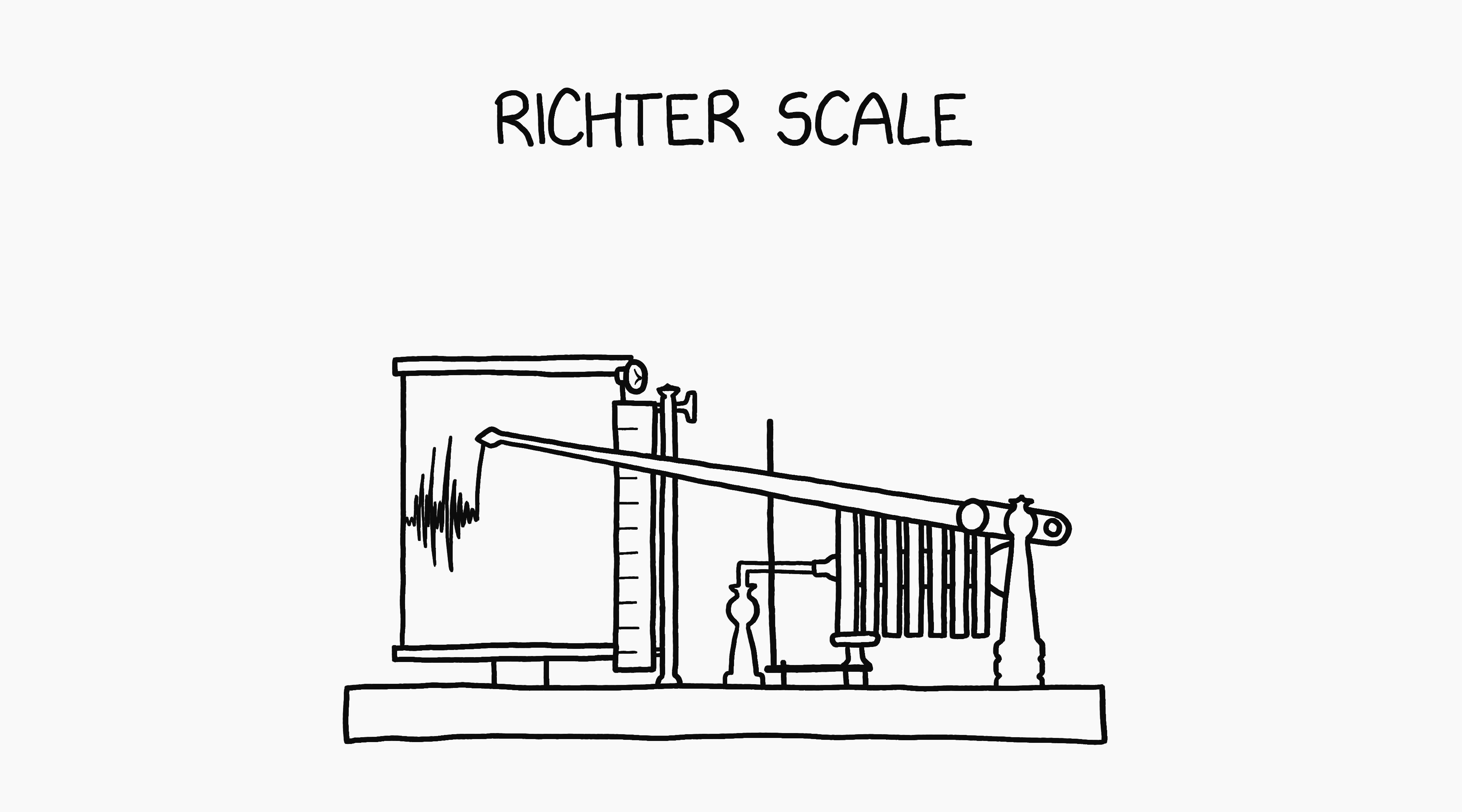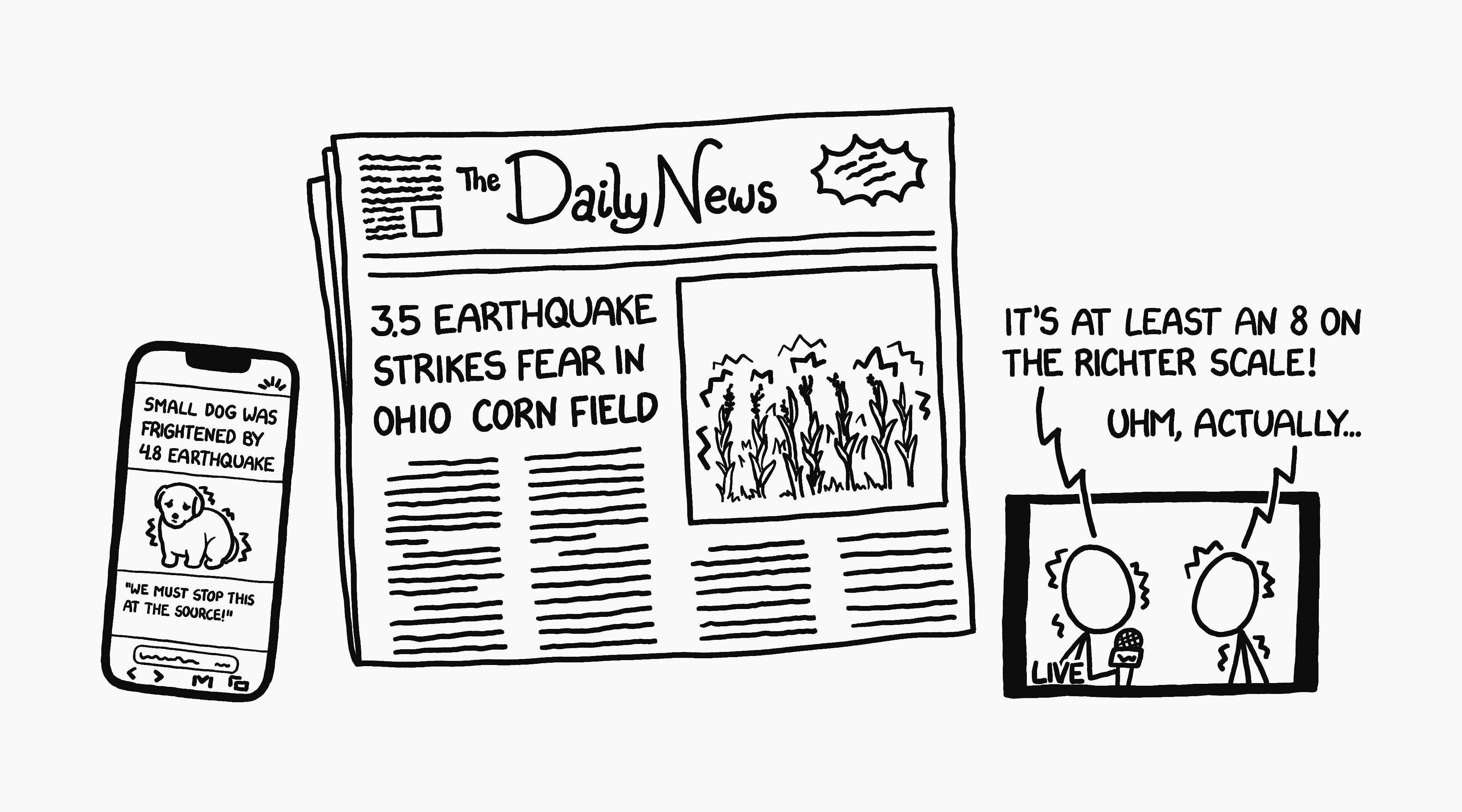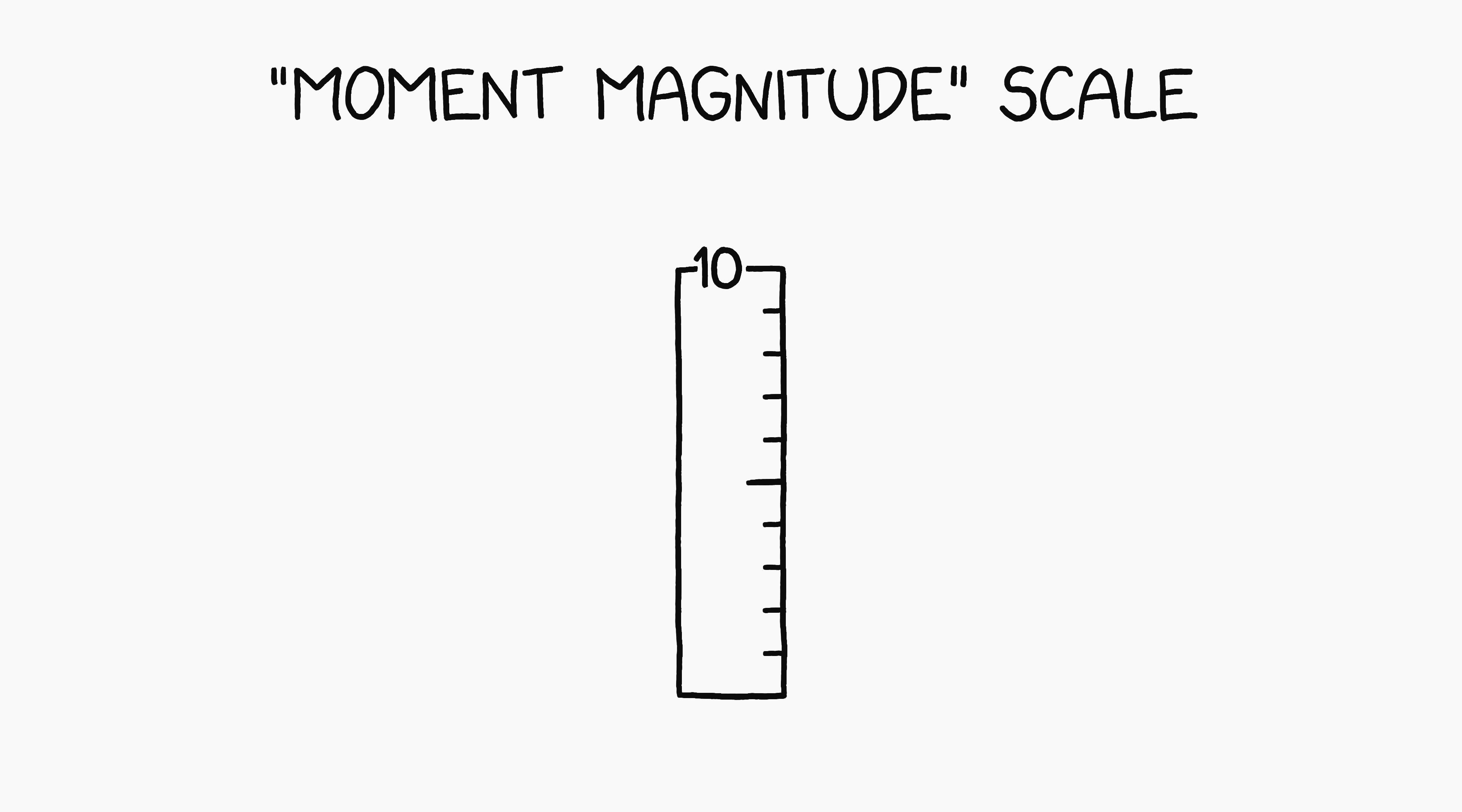The Richter scale, which has technically been replaced by the moment magnitude scale, measures the strength of an earthquake. Since we usually hear about earthquakes with ratings somewhere between 3 and 9, a lot of people probably think of 10 as the top of the scale and 0 as the bottom. In fact, there is no top or bottom to the scale.